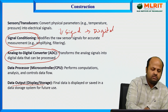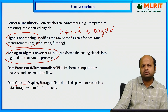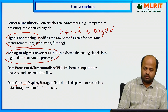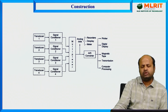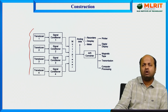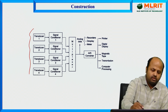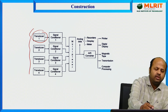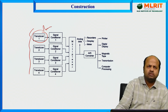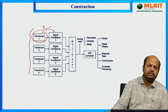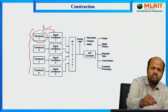After the processor, we can attach a display unit or memory card for displaying or storing the data acquisition data. As we can see in the figure, we have multiple transducers or sensors. Once the transducer captures the physical parameters and converts them into signals, this signal is given to the signal conditioning block, which amplifies it and removes noise from the signals.